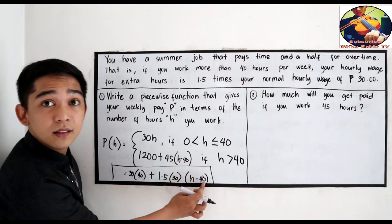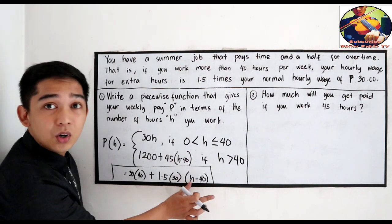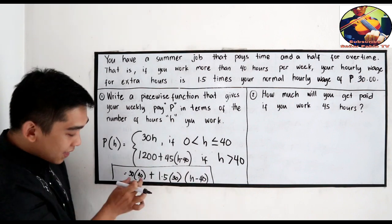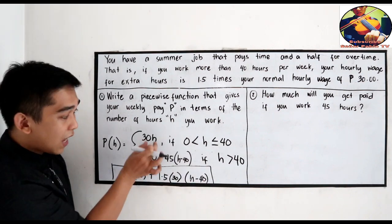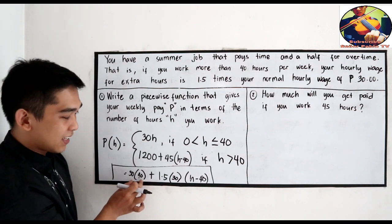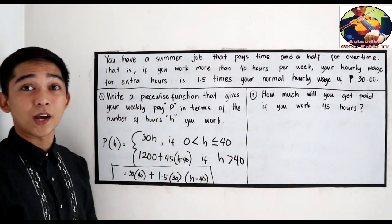Move the condition: if h is greater than 40. So this is our computation. Let me repeat, where did h minus 40 come from? That's the overtime, the number of hours you worked. Why minus 40? Because it's already paid here. Now this will be paid there. That's why we subtract it. So, now, the representation of our piecewise function.